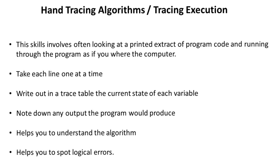This is a really excellent skill to get used to. Take each line of program code one at a time. Write out in a trace table on a scrap of paper the current state of each variable as it changes and as it updates. Note down any output the program would produce as it would produce it. By doing this, you really get to understand the workings of an algorithm and it can really help you spot logical errors.